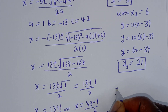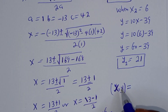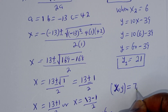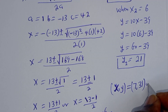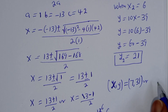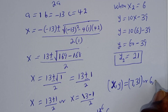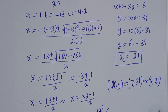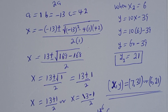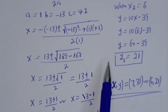Therefore our final answer is: S comma Y is equal to 7 comma 31, or 6 comma 21. This is the final answer. Thank you for watching — don't forget to like, share, comment, and subscribe.